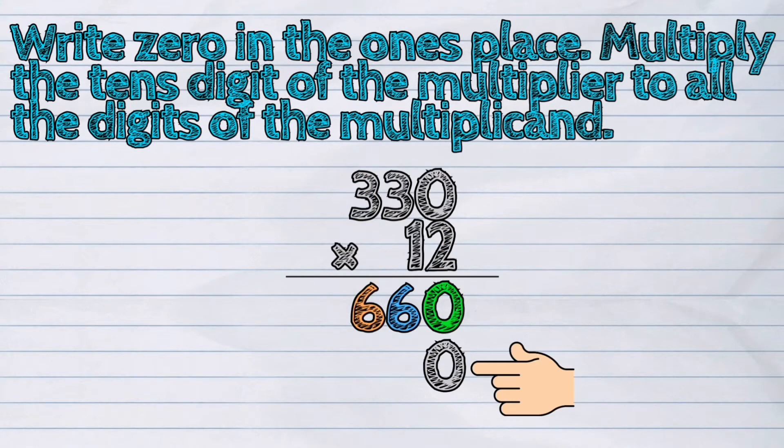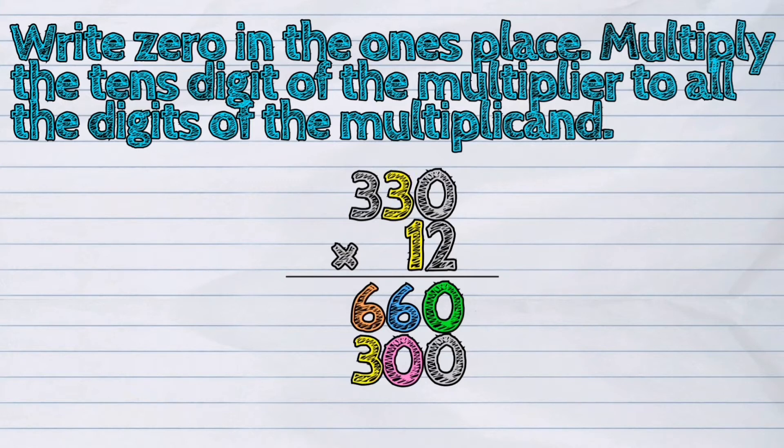Next, write 0 in the ones place. Multiply the tens digit of the multiplier to all the digits of the multiplicand. 1 times 0 is 0. 1 times 3 is 3. 1 times 3 again is 3.